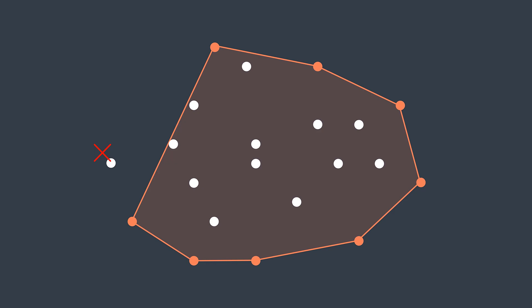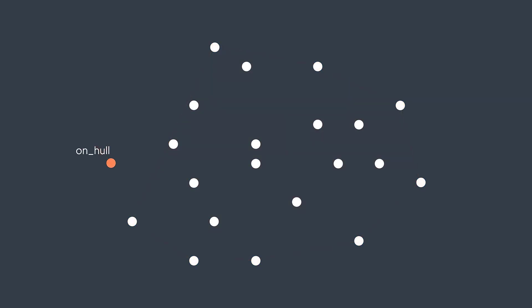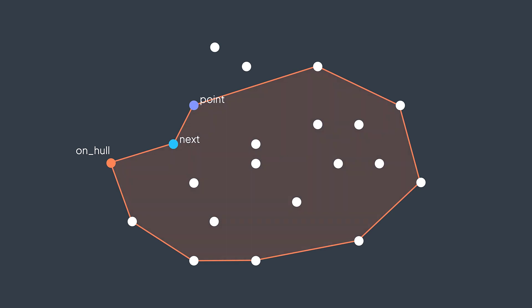For the first point, we search for the point with the smallest x coordinate. But what about the second one? Imagine we assume a point will be the next point in the hull, then as we keep traversing the points, we find another one. We can take just the farther one, because when we close the convex hull, the other point will be included.